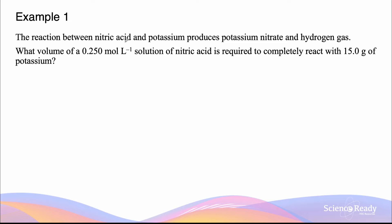The reaction between nitric acid and potassium produces potassium nitrate and hydrogen gas. Before we read the rest of the question, let's try to write a balanced chemical equation for this reaction.